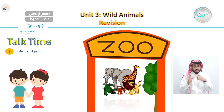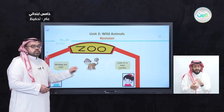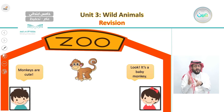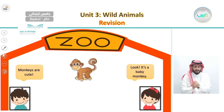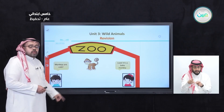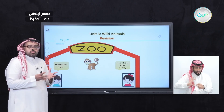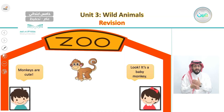In this unit we started by listening to a conversation between a brother and his sister when they went to the zoo. The sister pointed to the animal and said, 'Look, it's a baby monkey.' Her brother described monkeys as, 'Monkeys are cute.' Cute is something good — the brother likes monkeys, so he says, 'Monkeys are cute.'